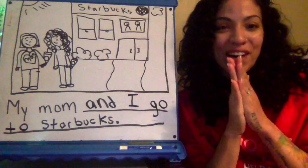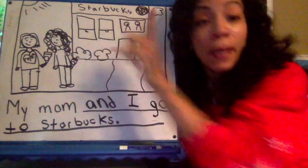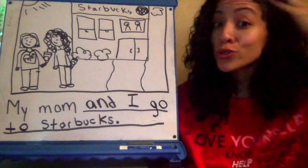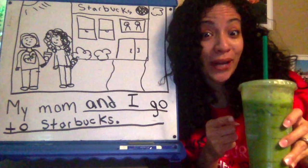All right, y'all. So I drew my picture. You see this mom and it's Mrs. P. My mom has straight hair. Mrs. P has curly hair. And you know how I be with my Starbucks. Look at this. I got it. So right here.